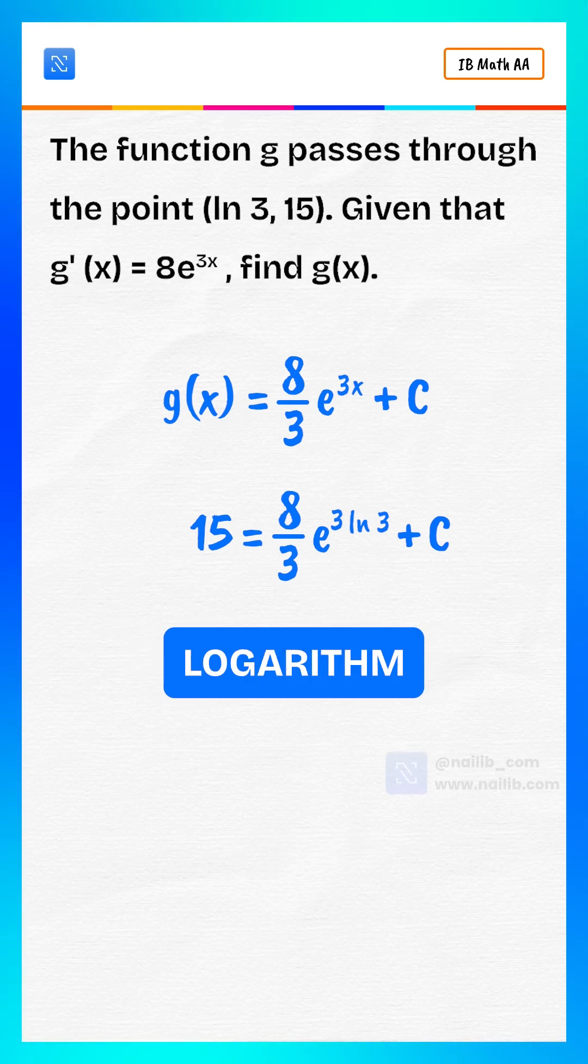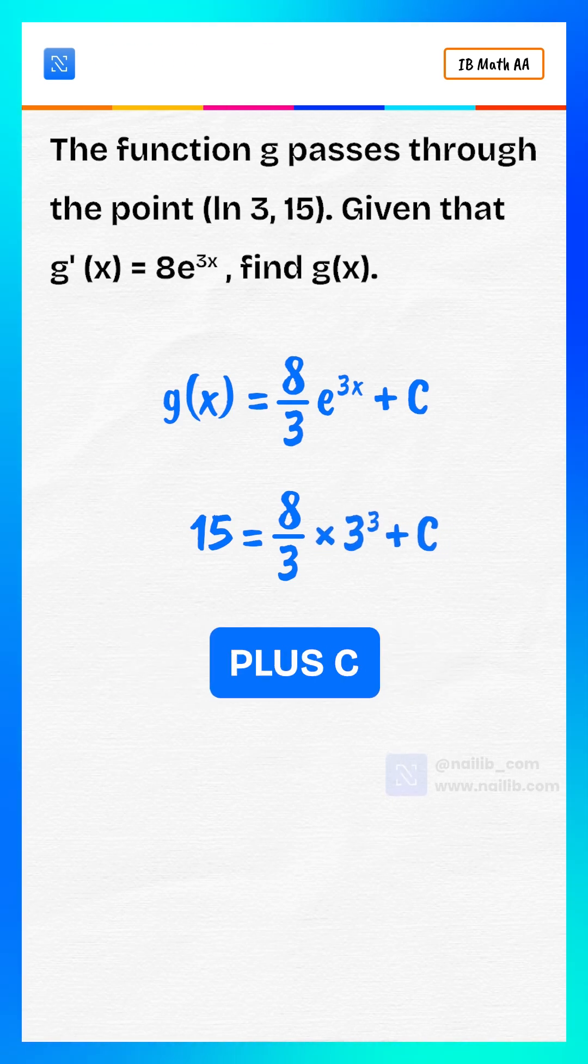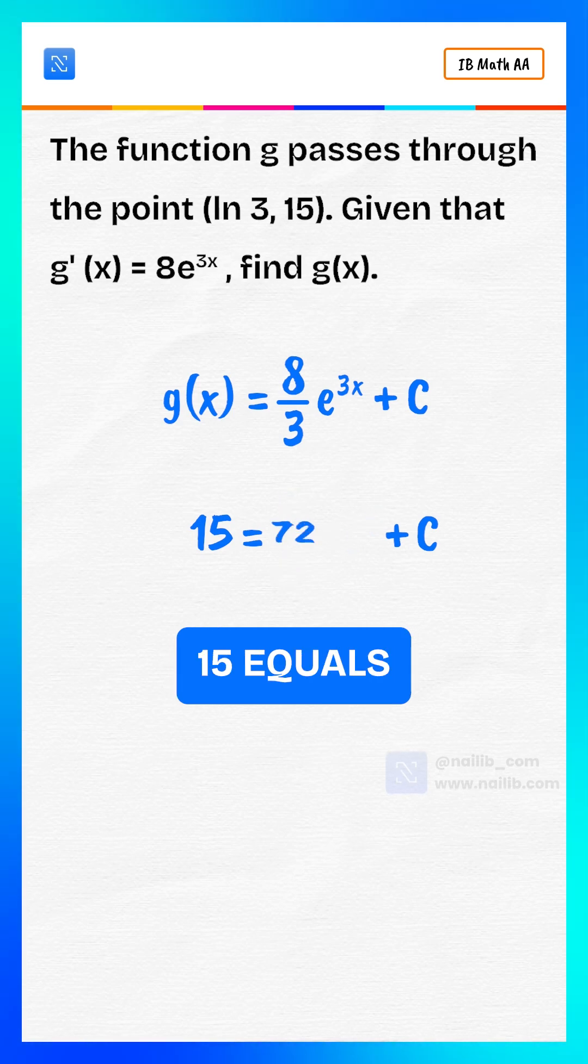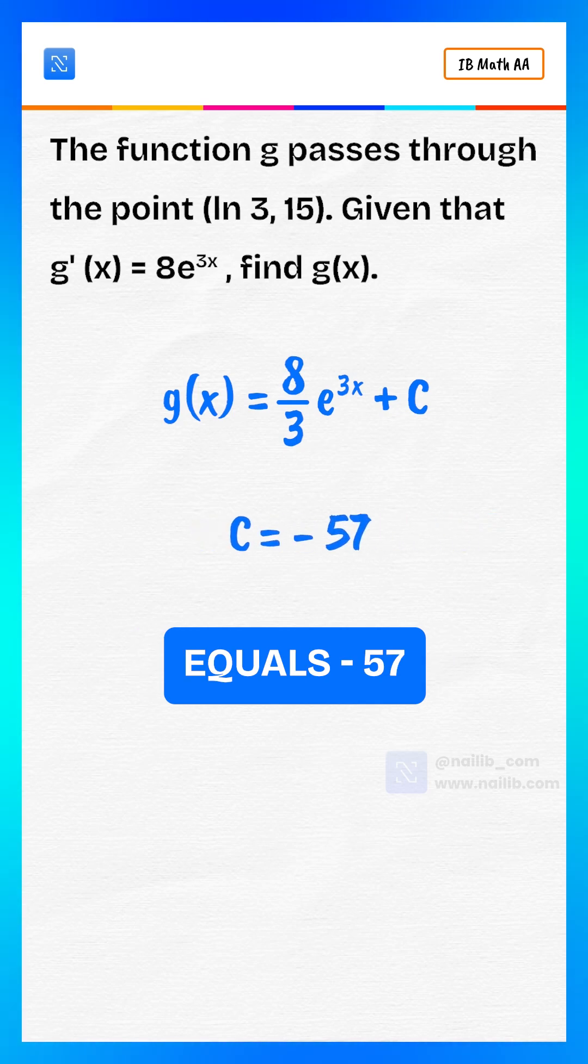Now, using the natural logarithm property, 8 over 3 times 3 to the power of 3 plus c, so we get 15 equals 72 plus c. That means c equals negative 57.